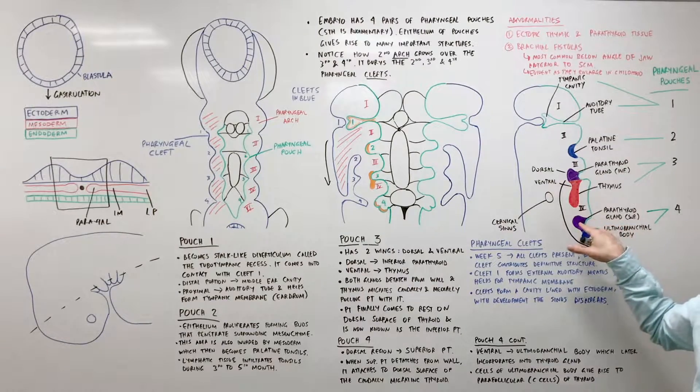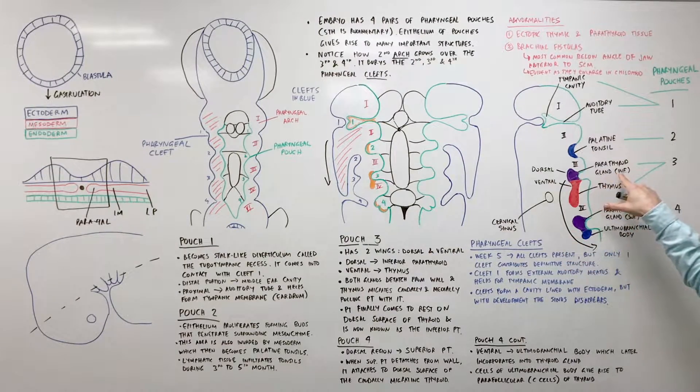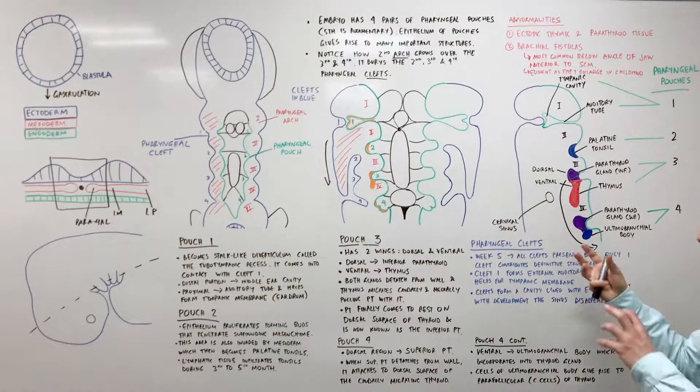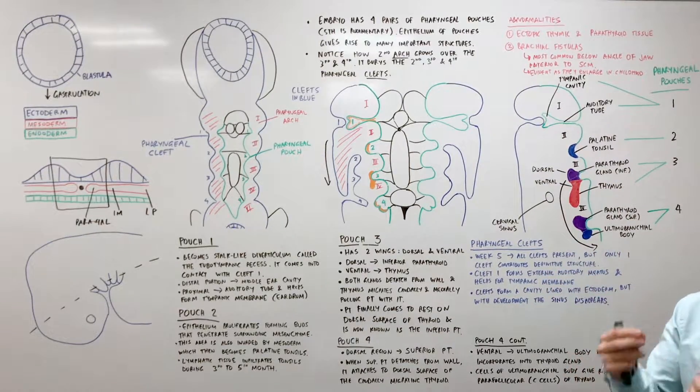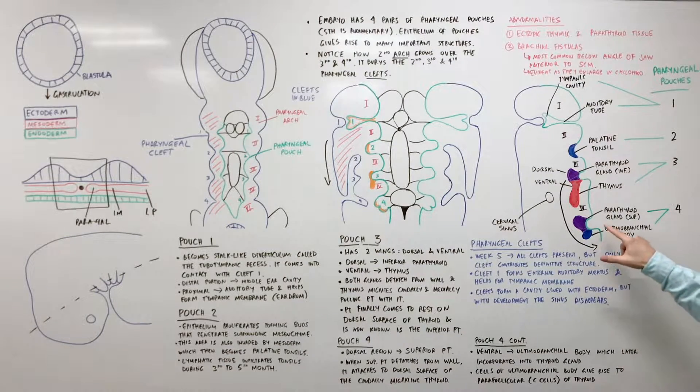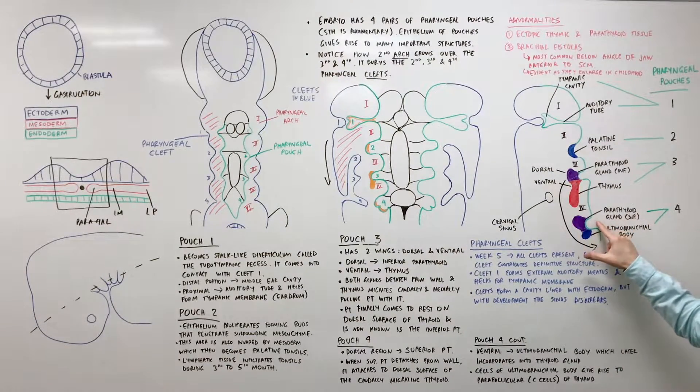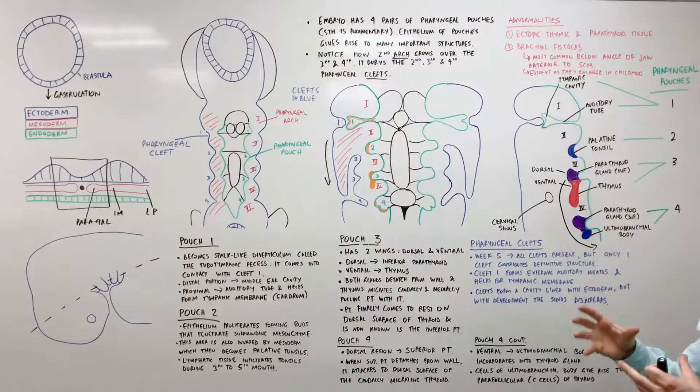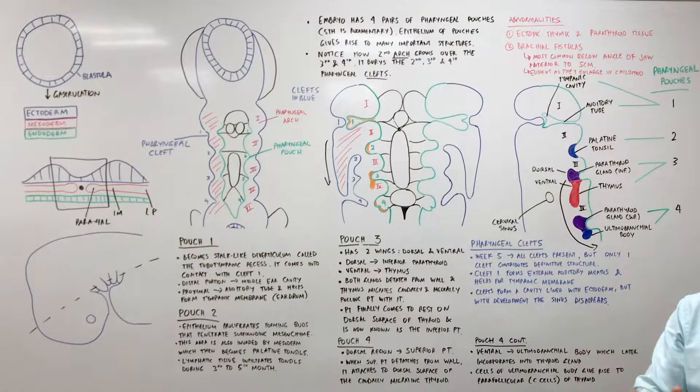The inferior parathyroid gland is pulled down with the thymus migrating and so its final position will be inferior to the superior parathyroid gland. The parathyroid gland, the superior ones, also detach from the wall and will have its final position on the dorsal surface of the thyroid.